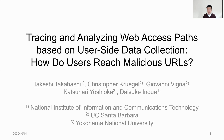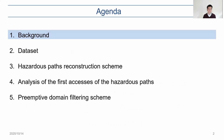How do users reach malicious URLs? In this talk, I will cover the background of this work, the dataset, the hazardous path reconstruction scheme, analysis of the first accesses of the hazardous path, and the preemptive domain filtering scheme. Now let's move on to the background of this work.